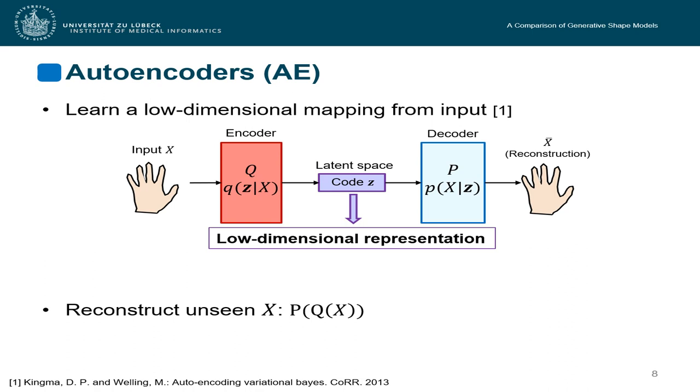Now, if we want to reconstruct an unseen input image, we need to input it through the trained encoder and then through the decoder. If we want to generate unseen samples, we need to sample a random latent vector and input it to the decoder.